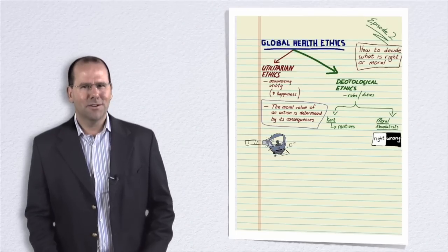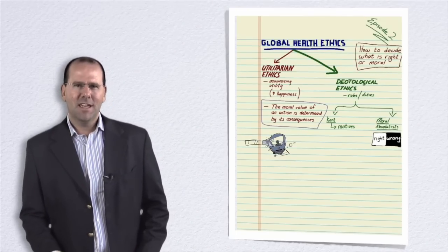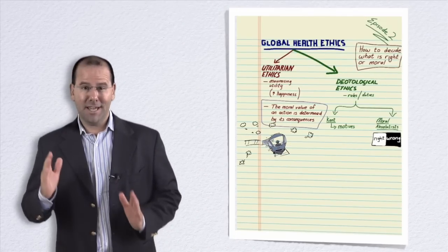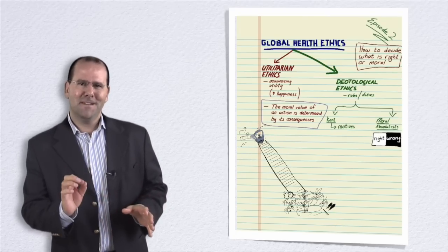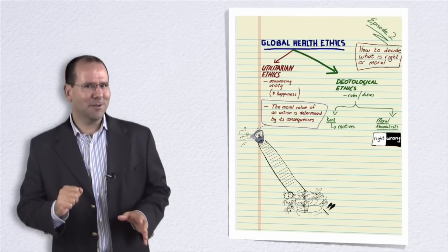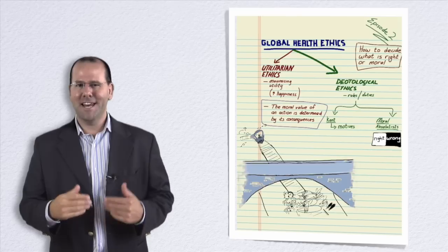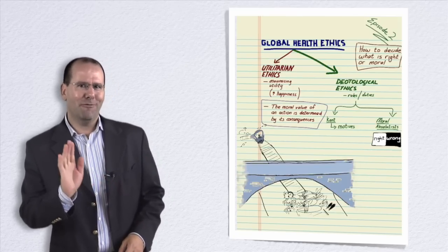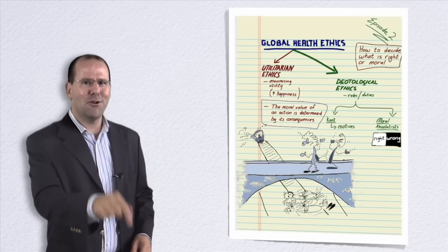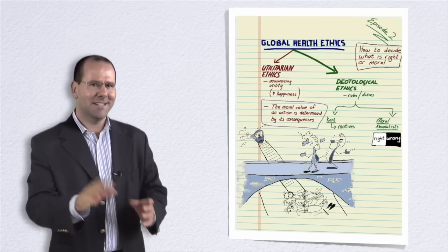Now let's make the scenario a little more complicated. Imagine that the trolley is once again hurtling down and there's five people tied to the track. This time, however, there's no lever to pull. Instead, you're standing on a footbridge that goes over the track. You've got the option of pushing a tramp off the bridge onto the track and thereby stopping the trolley and saving the five people. But of course, you'll kill the tramp in the process.